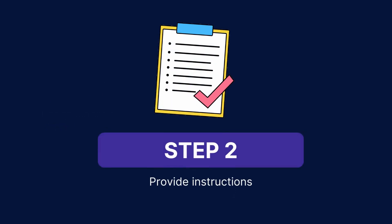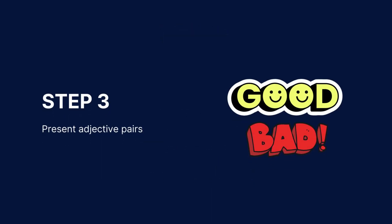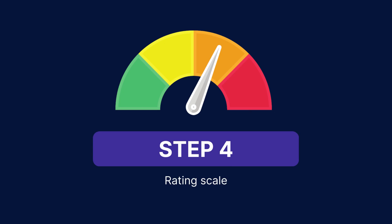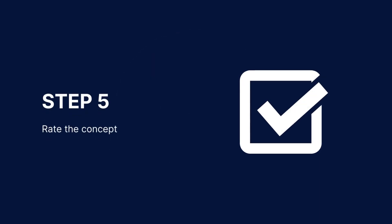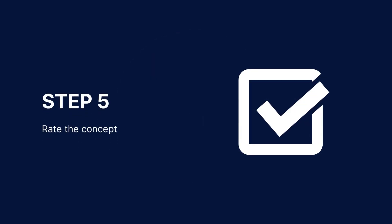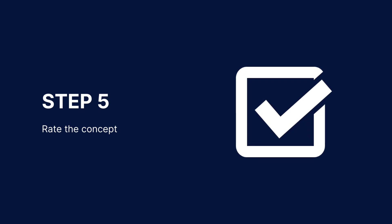Provide instructions: clearly explain the purpose of the scale and how respondents should complete it. Present adjective pairs: display the selected adjective pairs on the survey or research instrument — each pair should be separated and clearly labelled. Include a numerical scale or checkboxes for each adjective pair. Participants then rate the concept or object being evaluated for each adjective pair, marking the scale or selecting the appropriate checkbox that aligns with their perception.